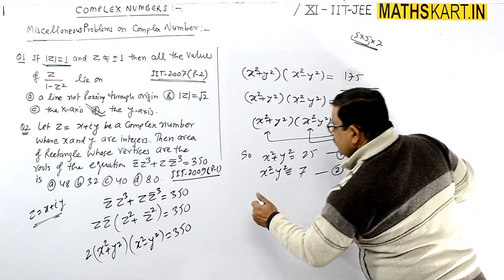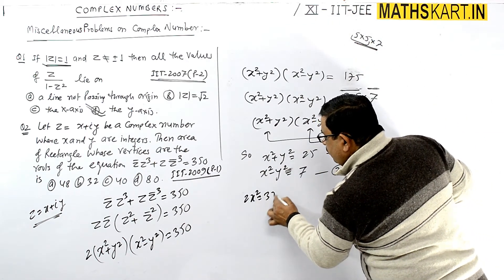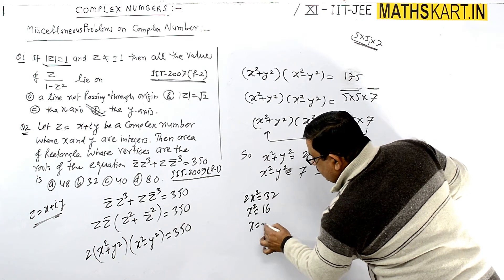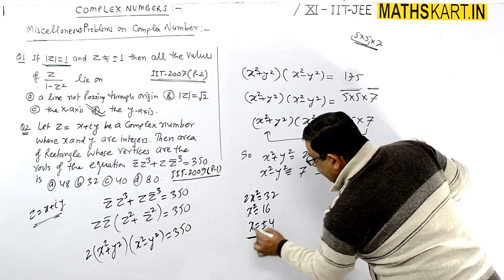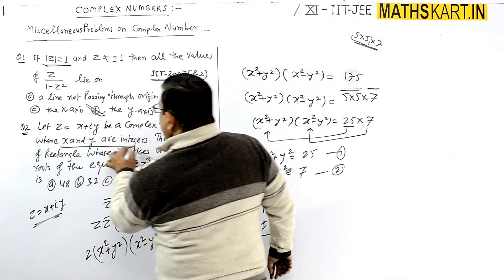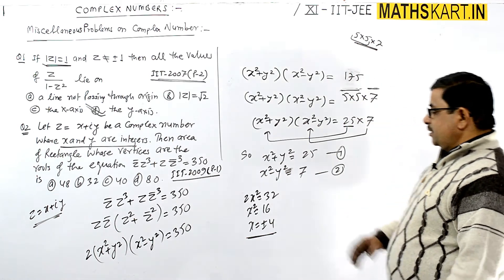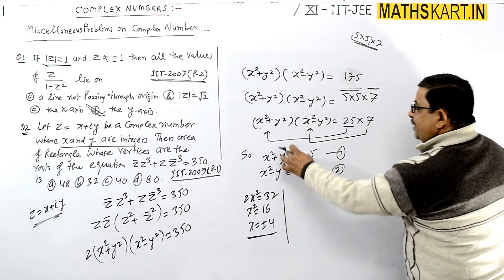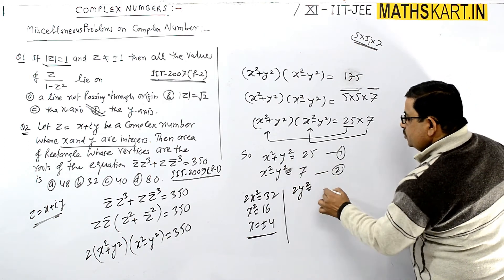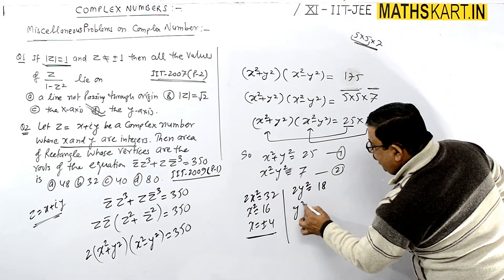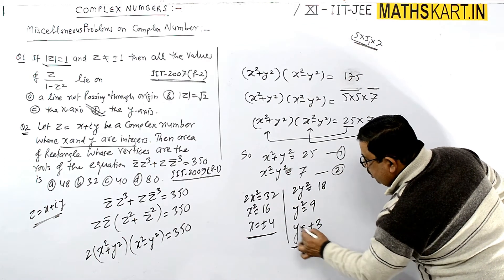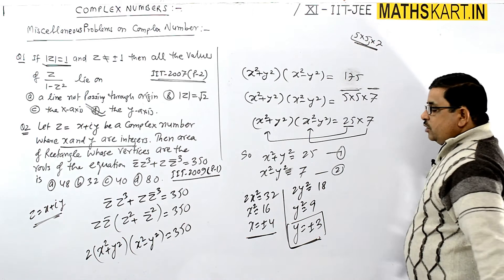Adding the two equations: 2x² equals 32, so x² equals 16, giving x equals plus or minus 4 — which are integers. Subtracting: 2y² equals 18, so y² equals 9, giving y equals plus or minus 3 — also integers. Both conditions are satisfied.